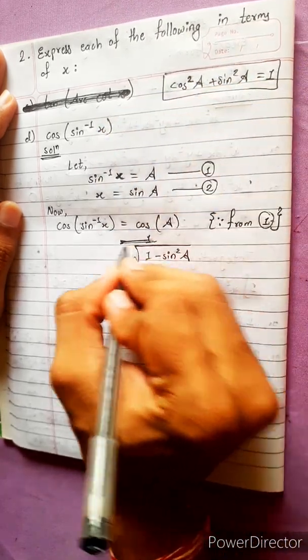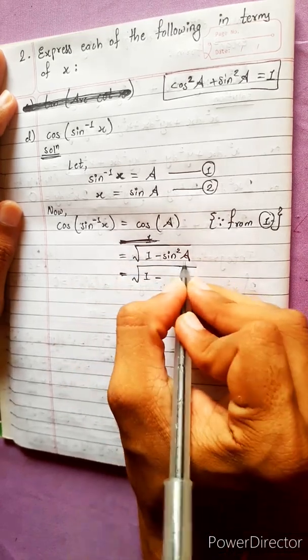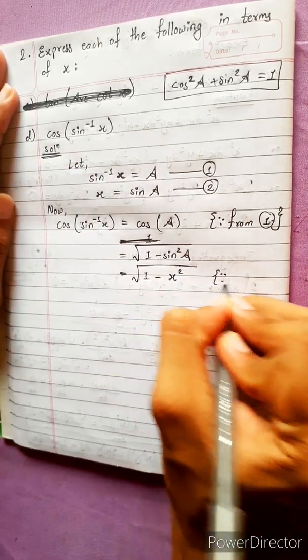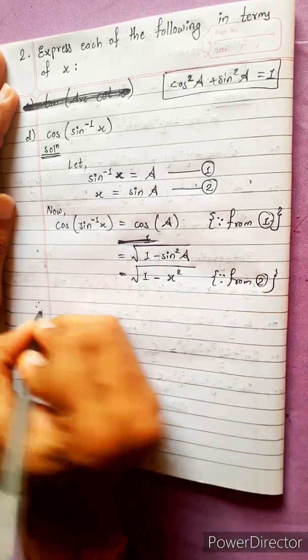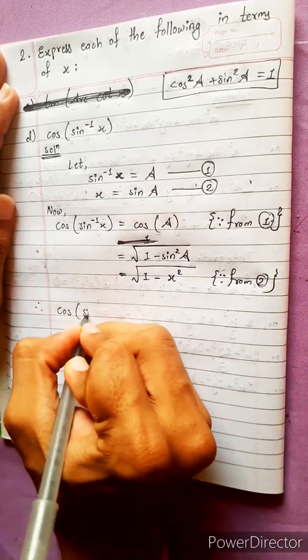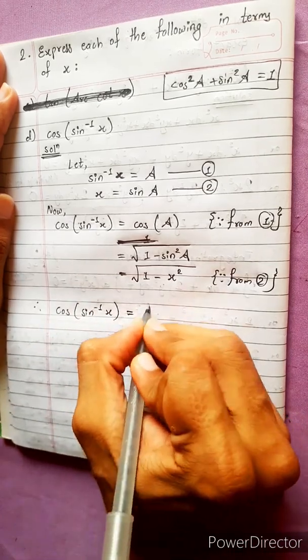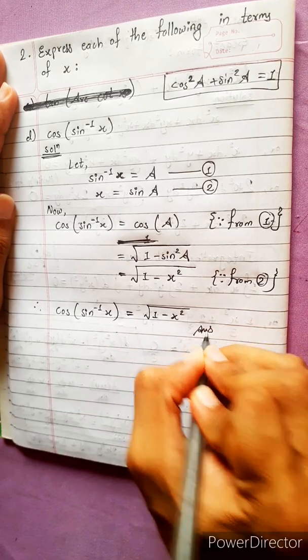Equals to, on the root, 1 minus sin square A means x. X square. Simple. So, this we write from equation 2. We got the answer. Therefore, cos sin inverse x equals to, on the root, 1 minus x square. This is our answer.